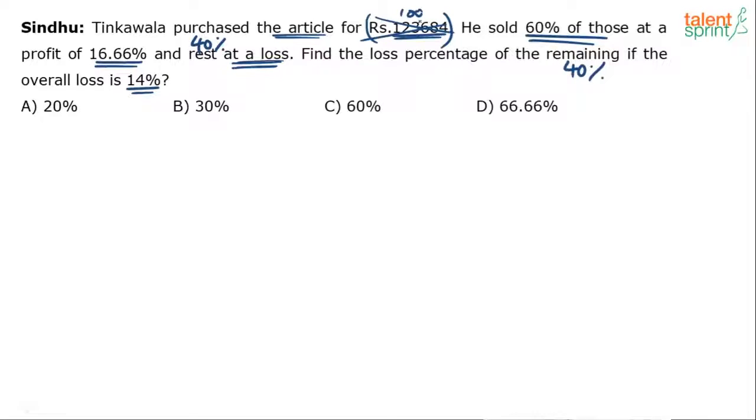See, irrespective of what the price per article is, since he is asking us to find out a percentage value, loss percentage, we can always assume that he has purchased 100 articles for 100 rupees each. He sold 60% of those at a profit of 16.66%. Meaning out of this 100, 60 were sold at a profit of 16.66%. Meaning if it was bought for 100 rupees, it was sold for 116.66 rupees.